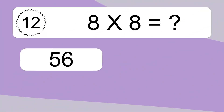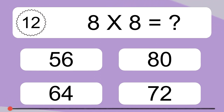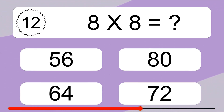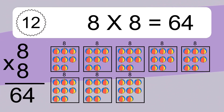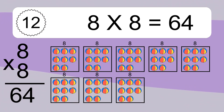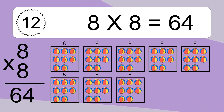8 times 8 equals what? 8 times 8 equals 64. We have 8 boxes and each box has 8 colorful balls inside. If you count all the balls in all the boxes together, you will have 8 times 8 balls. This equals 64 balls.